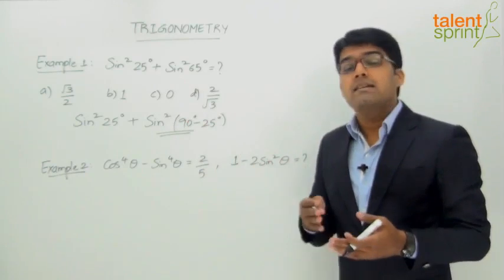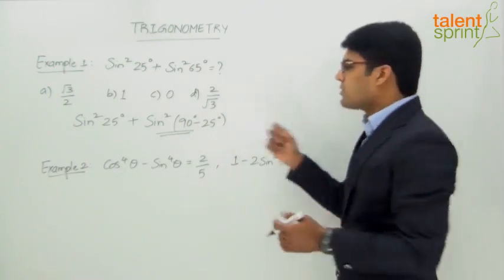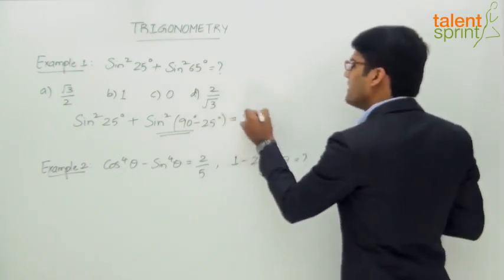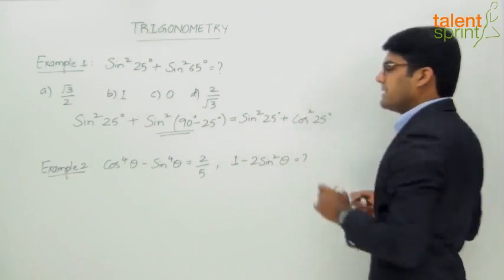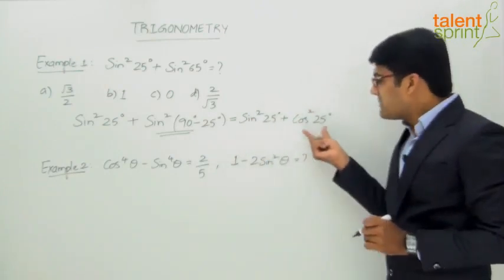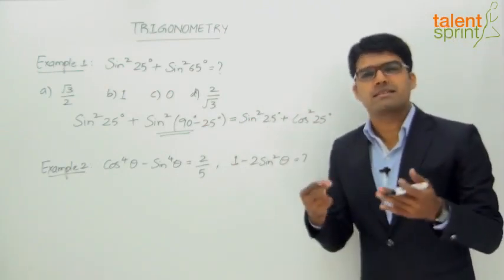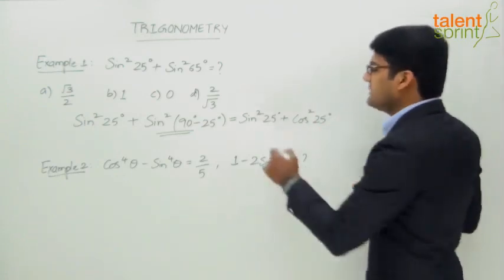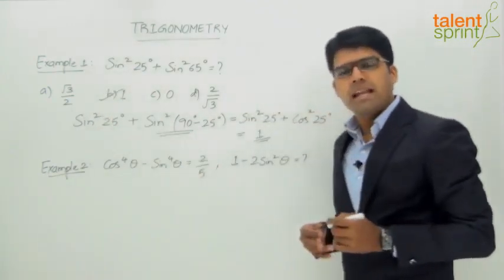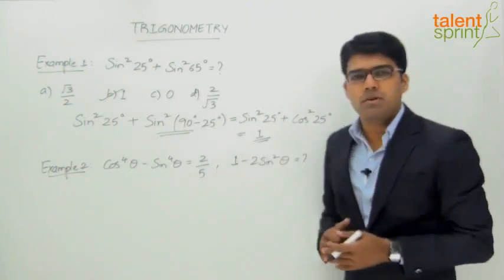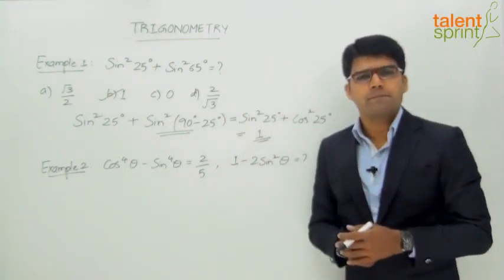Going by that logic, we can say this is equal to sin²25° + cos²25°. And we know that sin²θ + cos²θ = 1, whatever be the value of θ — that is the basic trigonometric identity. So the answer for this question is option B, which is 1. You need not even put these steps on paper; if you have the right logic, you can visualize the steps and mark the answer within no time.